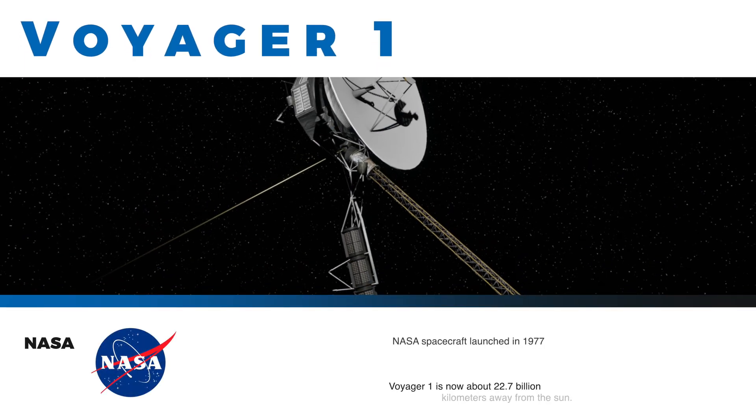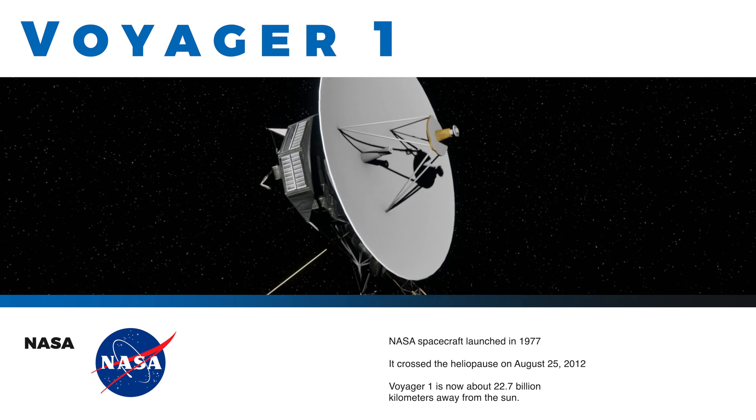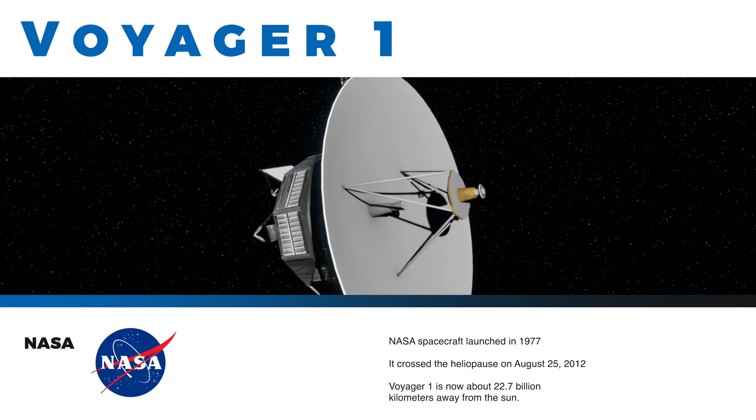Voyager 1 is a NASA spacecraft launched in 1977. It crossed the heliopause on August 25, 2012, becoming the first human-made object to reach interstellar space.